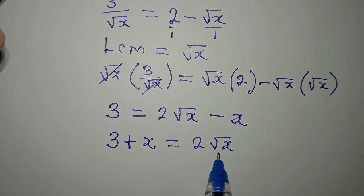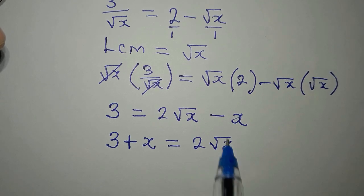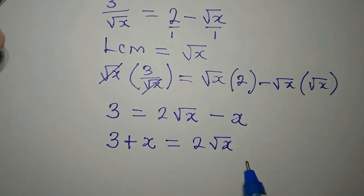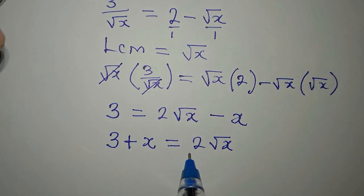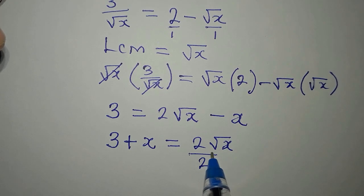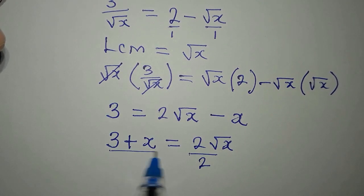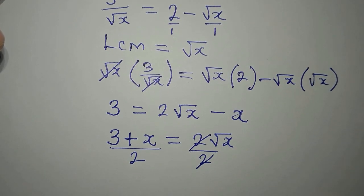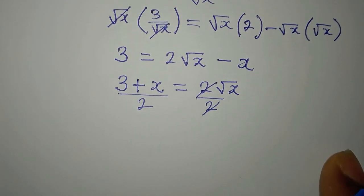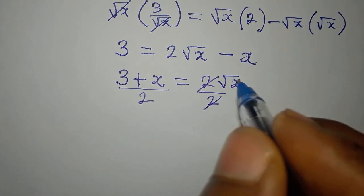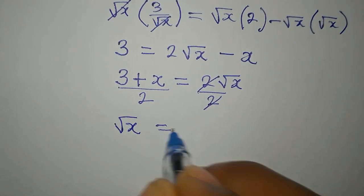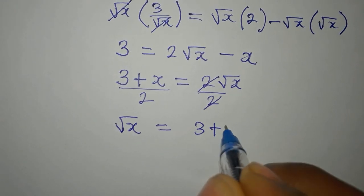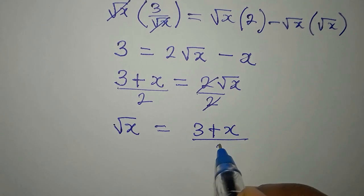This is 2 square root of x and not just square root of x. So what do we do in this case? We want to make root x the subject, so we divide both sides by 2. This is going with that. Now we have the value of root x — root x will now be (3 plus x) over 2.